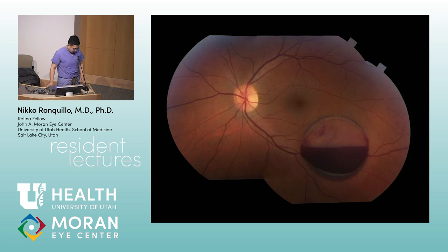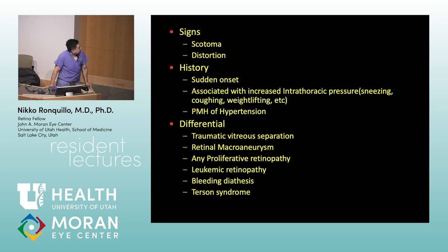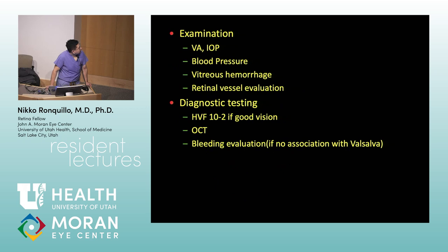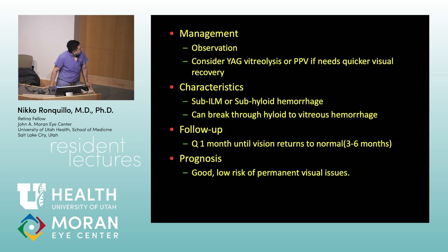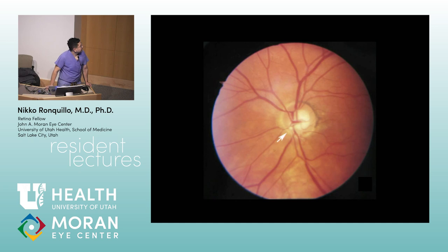Next — Valsalva retinopathy. This is a pre-retinal hemorrhage trapped by the hyaloid — you see the hyaloid circling the blood. History of sneezing, coughing, or lifting heavy objects. That's a classic one.